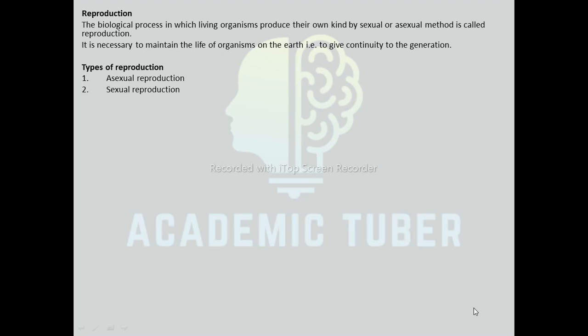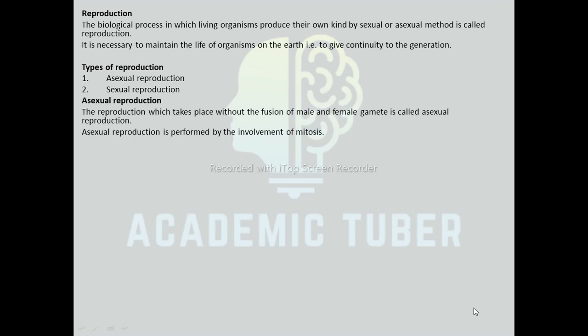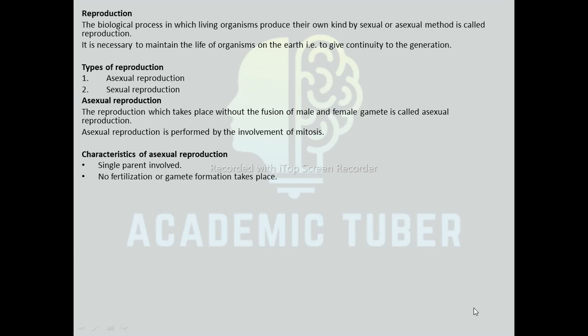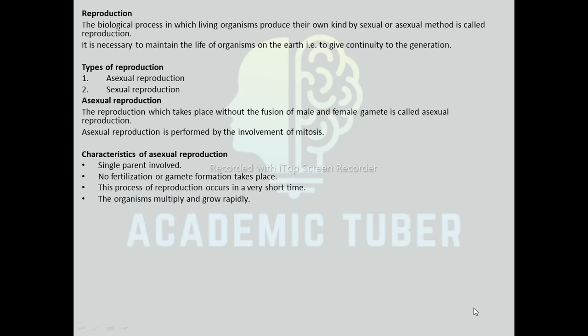We are going to discuss reproduction under two headings: Asexual Reproduction and Sexual Reproduction. Asexual Reproduction is the reproduction which occurs without the fusion of male and female gametes, and it is performed by mitosis, i.e. equational cell division. In asexual reproduction, only a single parent is involved, there is no fertilization, the process occurs in a very short time, organisms multiply rapidly, and the offspring are genetically identical to their parents.